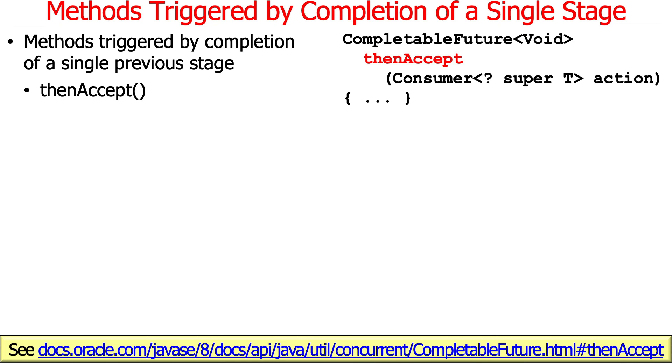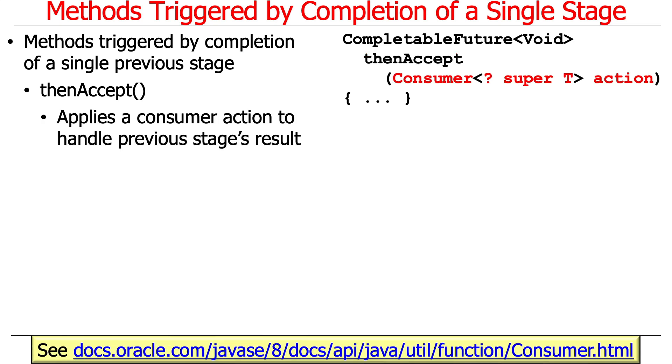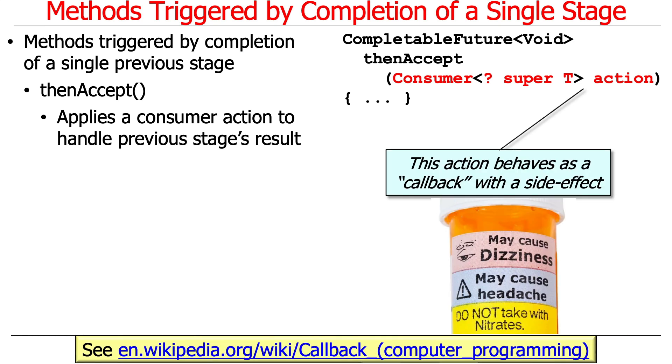So you can see thenAccept takes a consumer. Remember consumers? Consumers are used in several places in Java streams, for example in spliterators for the tryAdvance method. It's basically a pass-by-reference-like model that often has side effects. What will happen is this consumer's action will be called to handle the results of the previous stage when it completes. The action that's passed in, this consumer, behaves as a callback. You're registering a callback that has some kind of side effect.